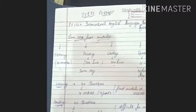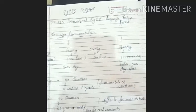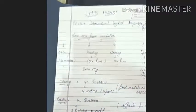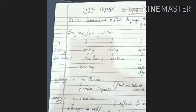There are four modules in IELTS. We have listening, reading, writing, as well as speaking. Listening lasts for about 30 minutes or 28 to 30 minutes.